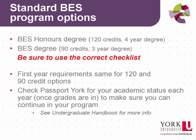There are two degree options in the standard BES program. The BES Honors degree, which is made up of 120 credits, typically completed in 4 years of study. And the BES degree, which is made up of 90 credits, typically completed in 3 years of study. Both degrees have the same first year of course requirements. However, there are separate checklists for the 120 credit program and the 90 credit program, so make sure you fill out the right one.